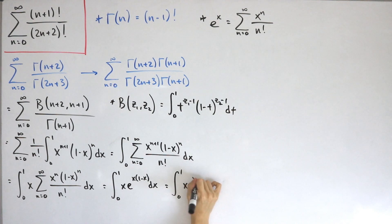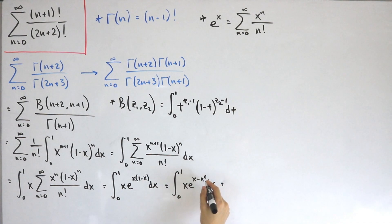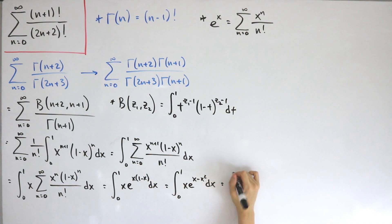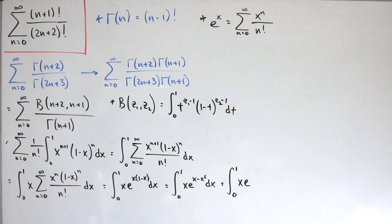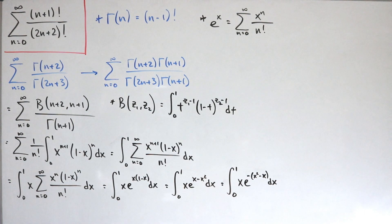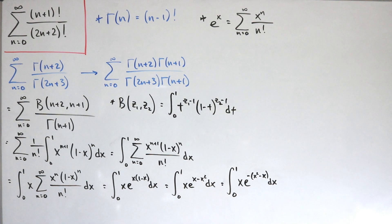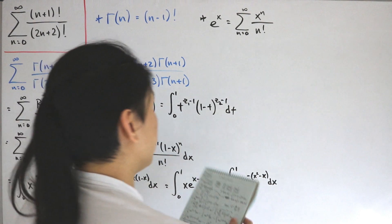Expanding, we have the integral from 0 to 1 of x·e^(x - x²) dx. Rearranging the exponent: the integral from 0 to 1 of x·e^(-x² + x) dx. We can factor out a negative so the exponent becomes -(x² - x), and we'll complete the square on x² - x.